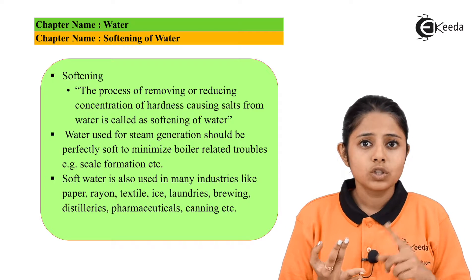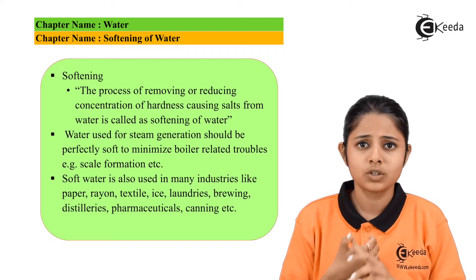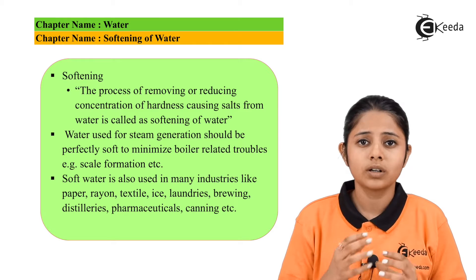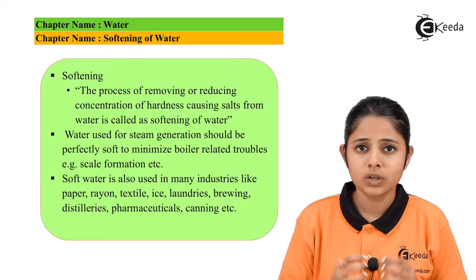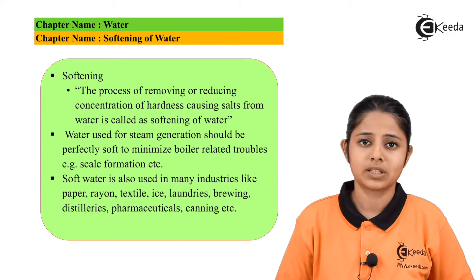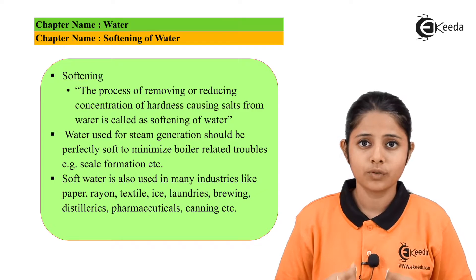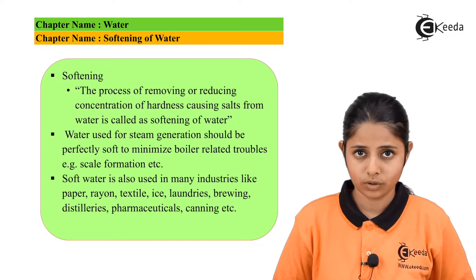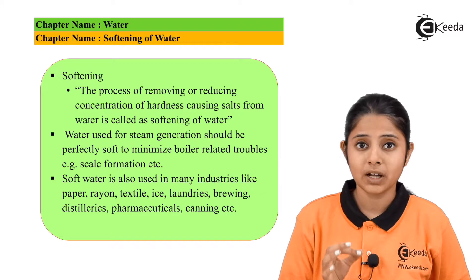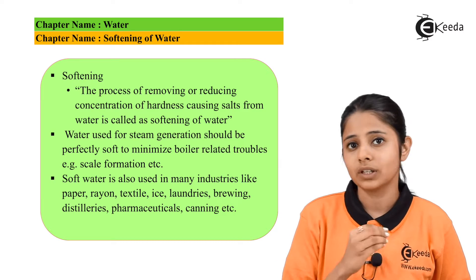Whether for domestic use, industrial use, pharmaceutical level, textile level, or production of rayons, soft water is much more preferred than hard water, because hard water has impurities that may cause degradation of machines or health. Temporary hard water can be converted into soft water by mere boiling, but permanent hard water needs chemical treatment, which can be given in various forms.